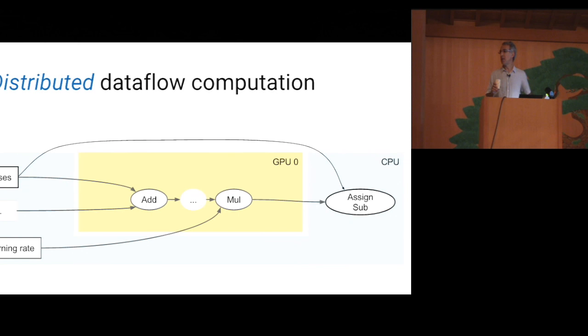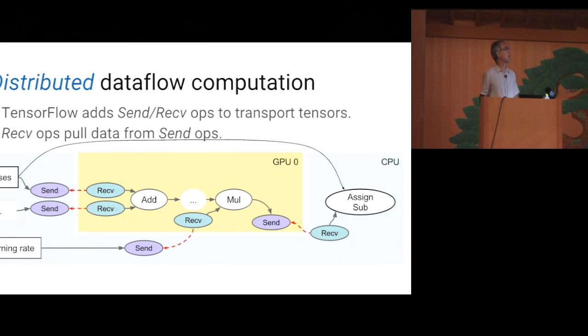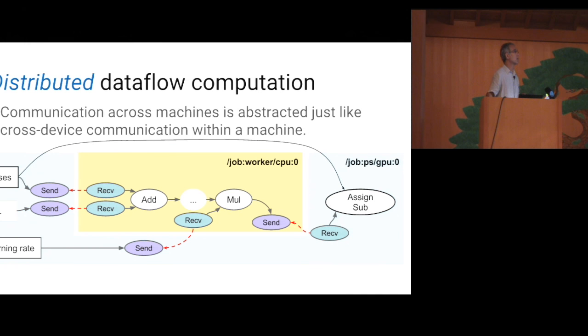The same graphs can be run on a single machine on one device, or be spread across multiple devices and multiple machines. For example, this graph has a part of the yellow part running on a GPU, and a blue part running on a CPU, and this implies very minimal changes to the single device model. TensorFlow automatically inserts little nodes at the boundaries between devices, pairs of send and receive nodes that transport tensors across the devices, using the appropriate communication mechanisms. The receive operations pull data from the send operations, and feed the data to the other nodes on their same devices. And communication across machines is abstracted just like cross-device communication within a machine, though of course it may rely on a very different transport, again with very minimal changes to the single device model.